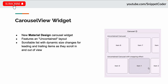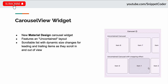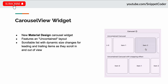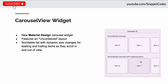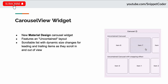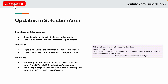The next update introduces new carousel widgets, so now we don't have to depend on third-party carousel widgets. It is introduced in Material Design itself and also as a feature of the uncontained layout. You can see in the image scrollable lists with dynamic size change for leading and trailing items as they scroll in and out of view.